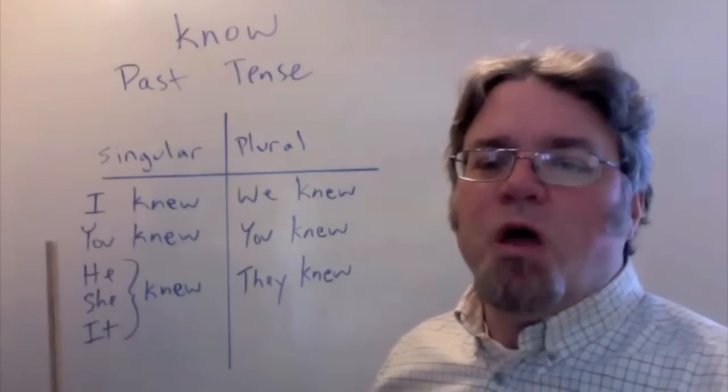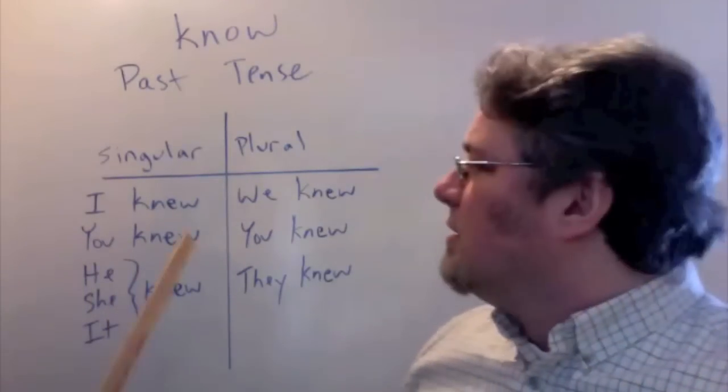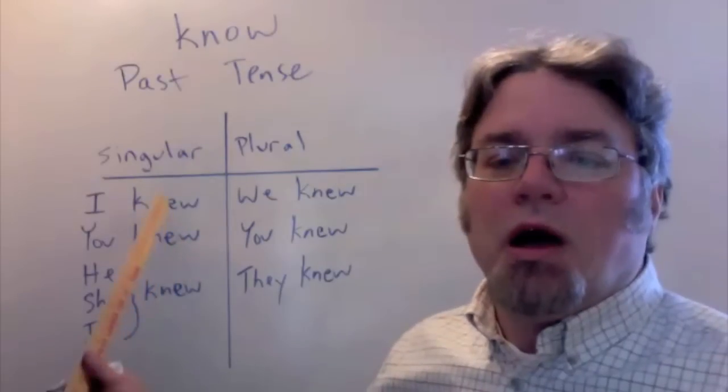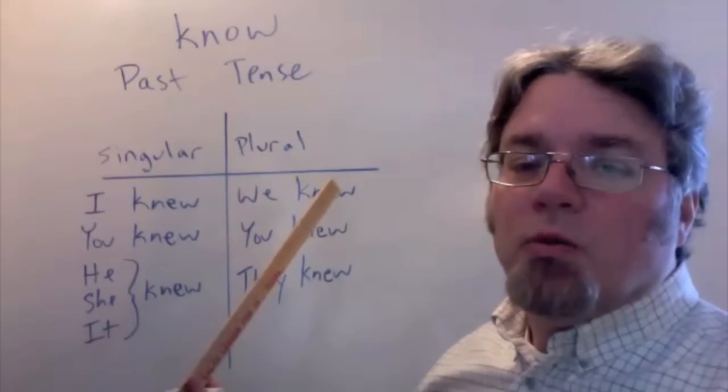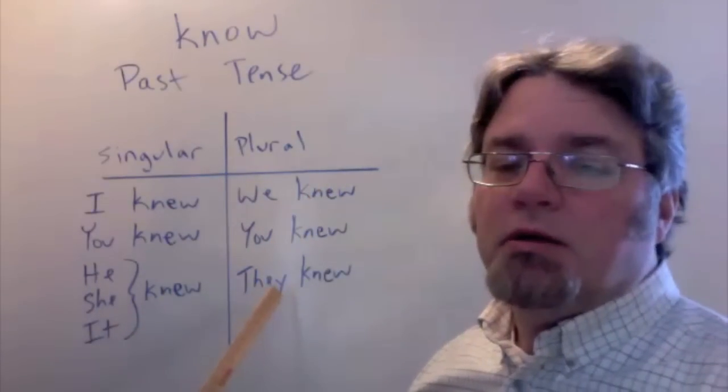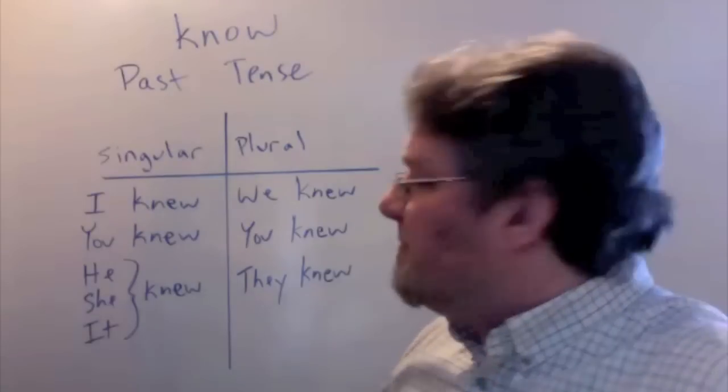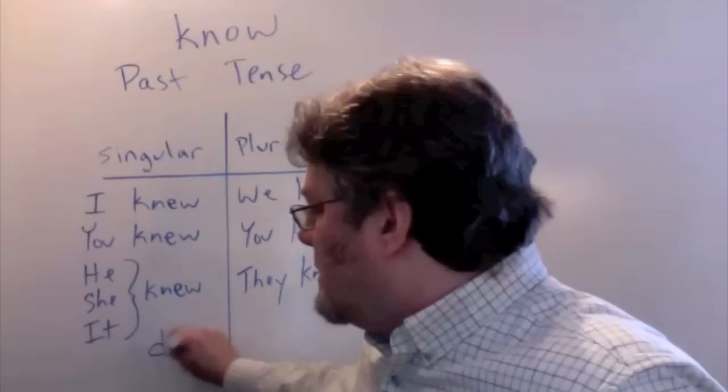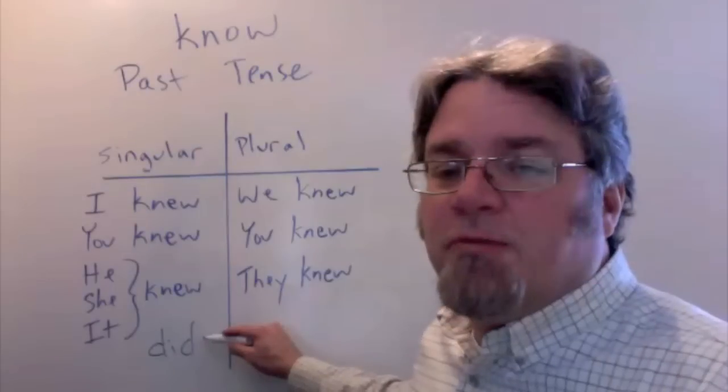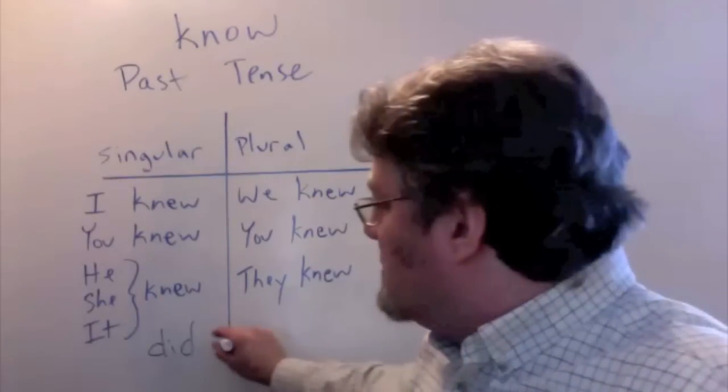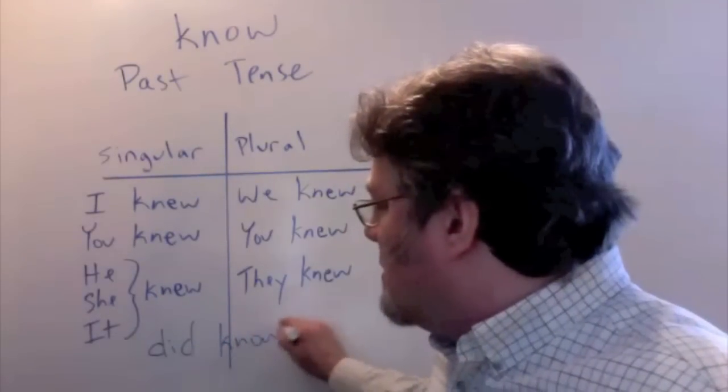Here's the verb know in the past tense. It doesn't change. It's just knew. I knew, you knew, he, she, it knew, we, you, they knew. And the helping verb would be did. Use did with the simple form of the verb: did know.